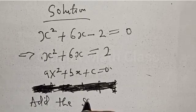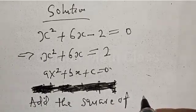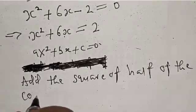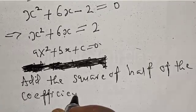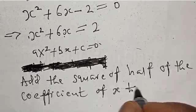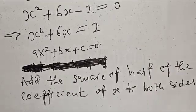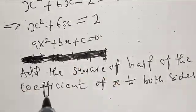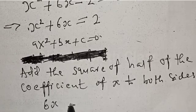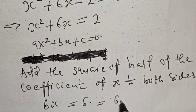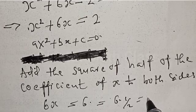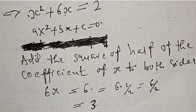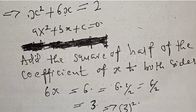Add the square of half of the coefficient of x to both sides. The coefficient of x is 6, so half of that is 6 over 2, and we square it. This gives us 3 squared. So we want to add 3 squared to both sides.